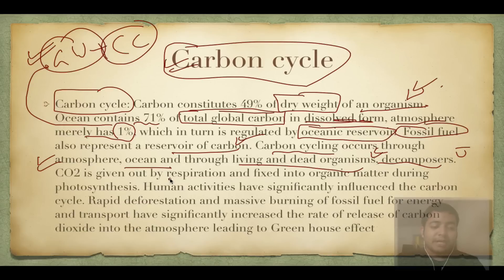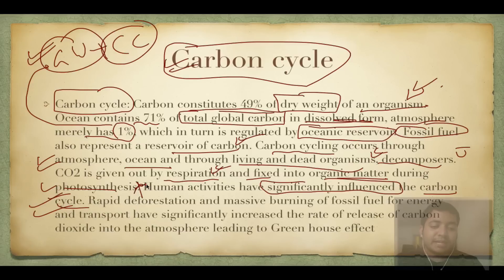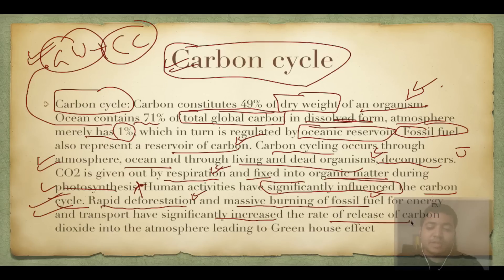Carbon dioxide is released by respiration and fixed by photosynthesis. Human activities have significantly influenced the carbon cycle. Rapid deforestation and massive burning of fossil fuels for transportation, vehicular emissions, and industrial emissions have led to a significant increase in the rate of release of carbon into the atmosphere, leading to the greenhouse effect.